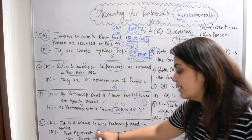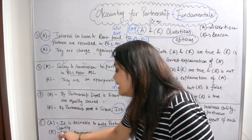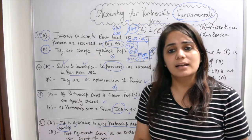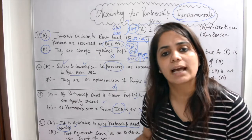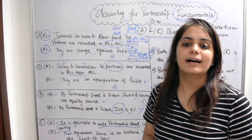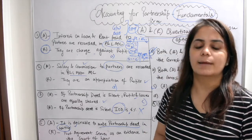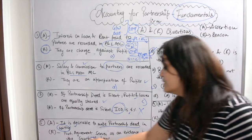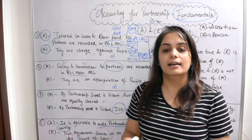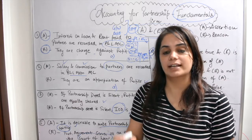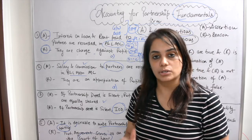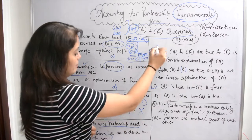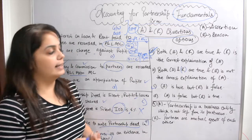Question four: Assertion — it is desirable to make a partnership deed in writing. That is obviously correct. If everything is written down, there is clarity for everyone — how profits and losses are shared, in what ratio, how much interest on drawings is charged, how much interest on capital will be given, etc. Reason — a partnership agreement serves as evidence in the court of law. That is very true. If the partnership deed is registered, it can be used as evidence in court. So the answer is Option A: both A and R are true, and R is the correct explanation of A.